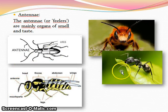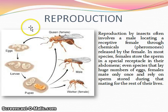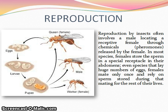Reproduction often involves a male locating a receptive female through chemicals called pheromones, released by the female. In most species, females store the sperm in a special receptacle in their abdomen. Even in species that lay huge numbers of eggs, females may mate only once and rely on sperm stored during that mating for the rest of their lives.